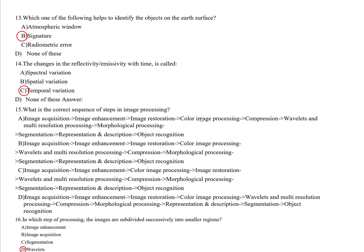Question fifteen: What is the correct sequence of steps in image processing? The correct sequence is: image acquisition, image enhancement, image restoration, color image processing, wavelets and multi-resolution processing, and morphological processing. This is the correct order of steps in digital image processing.